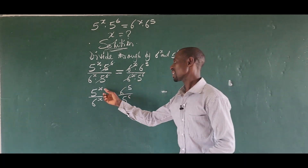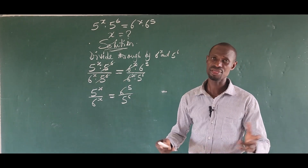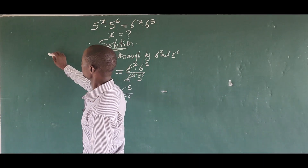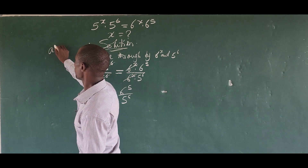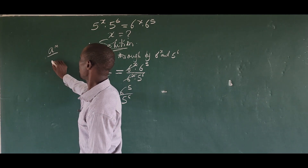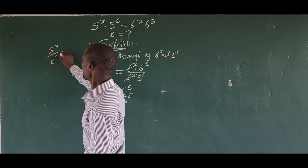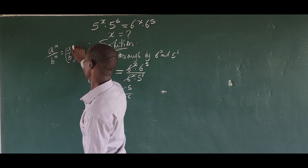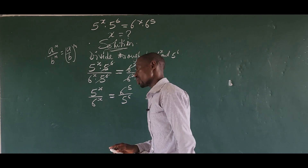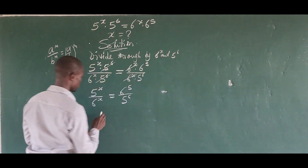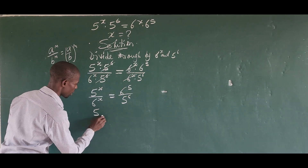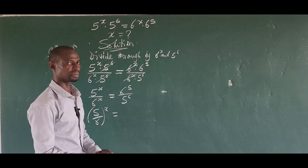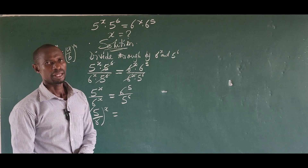Now if we look at this expression, both sides have the same power structure. There is a simple law in indices which says that a^m / b^m = (a/b)^m. Applying that, we can rewrite the left side as (5/6) raised to the power of x.